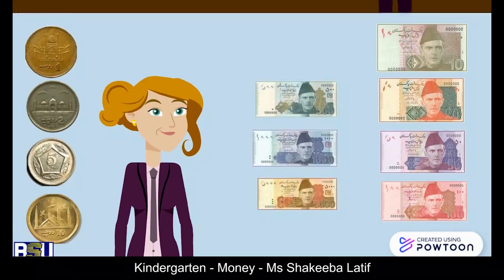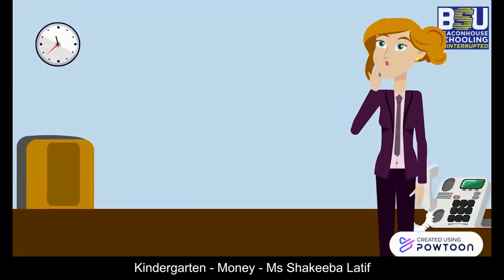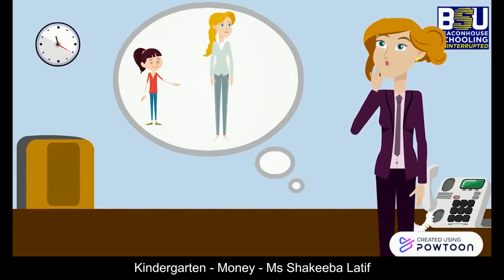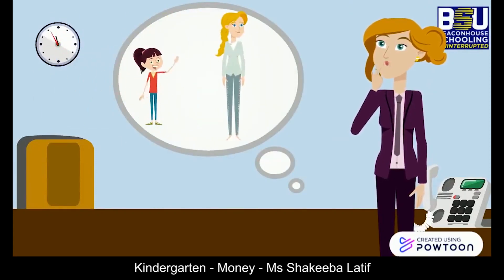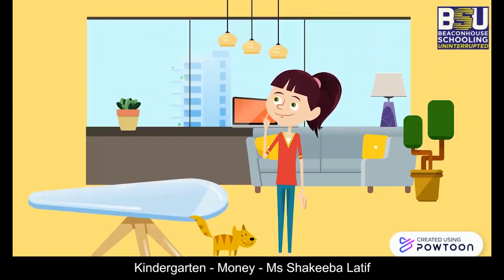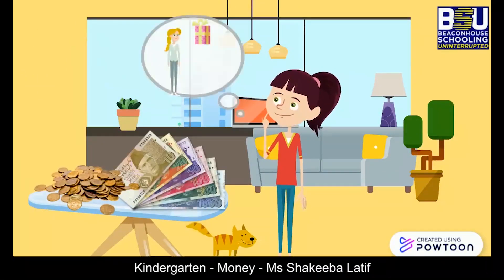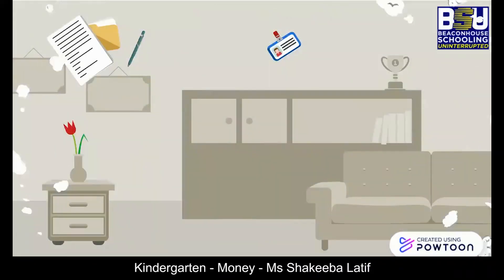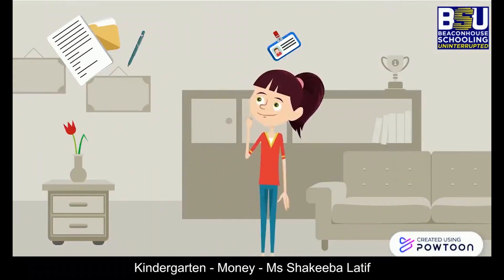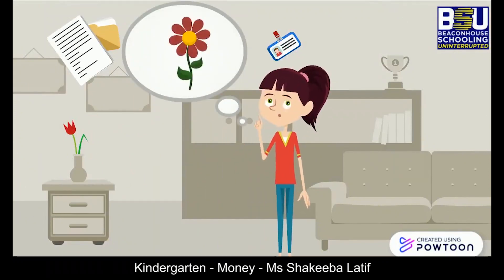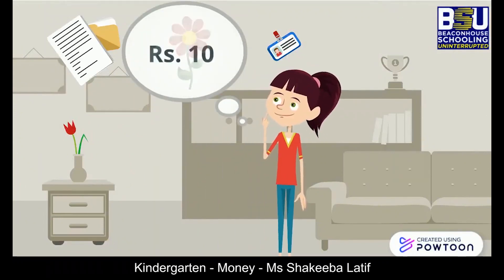To help us with this, let's meet Anna. She wants to buy a gift for her mother. She has collected some coins and notes to pay for the gift. Anna wants to buy a flower worth 10 rupees for her mother.